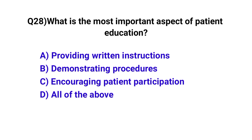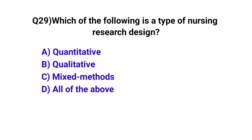Question number twenty-eight: what is the most important aspect of patient education? The correct option is C, encouraging patient participation. Question number twenty-nine: which of the following is a type of nursing research design? The correct answer is D, all of the above.